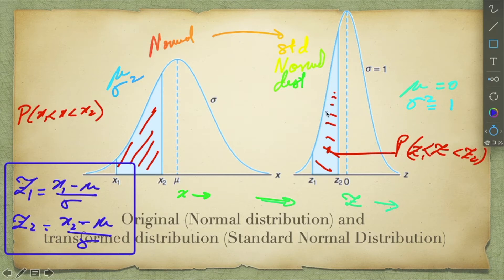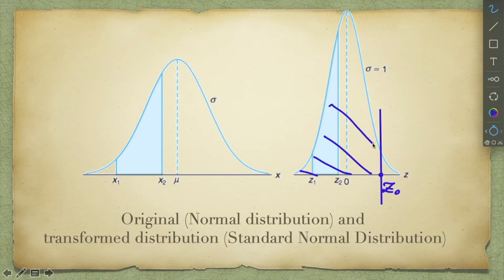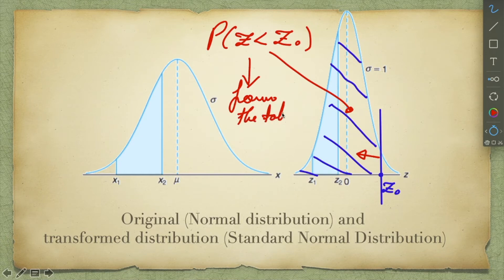The standard normal distribution helps us to quickly pick up the cumulative probabilities of z for less than some value of z. This cumulative probability is nothing but the area under the curve below a particular value of z. We can pick up this value from the tables of the standard normal distribution.